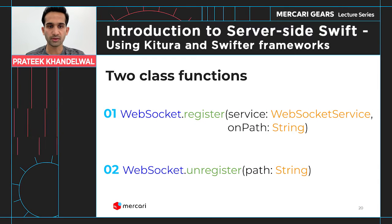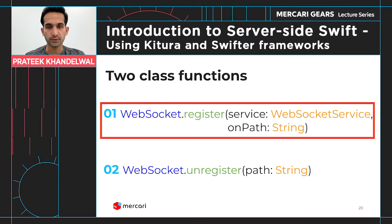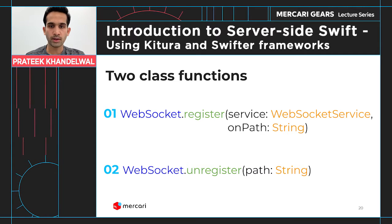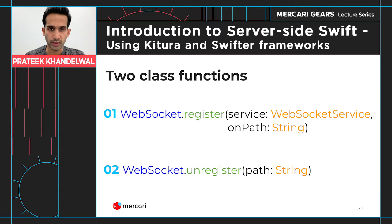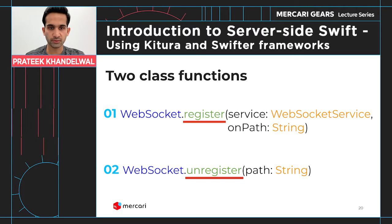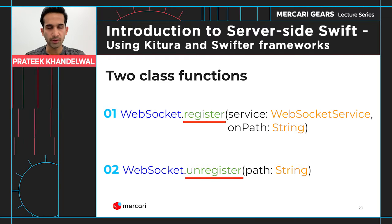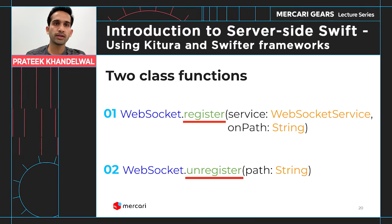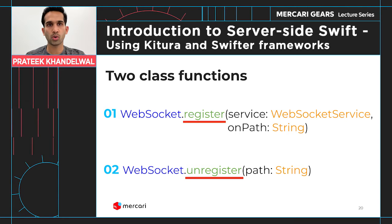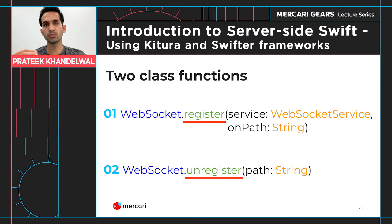There are two class functions: register and unregister. The register function takes a service and a path — this service is what we need to create, implementing the WebSocket service protocol. In the unregister function, you only need to pass the path, because it already knows which service is registered on that path and will unregister it.